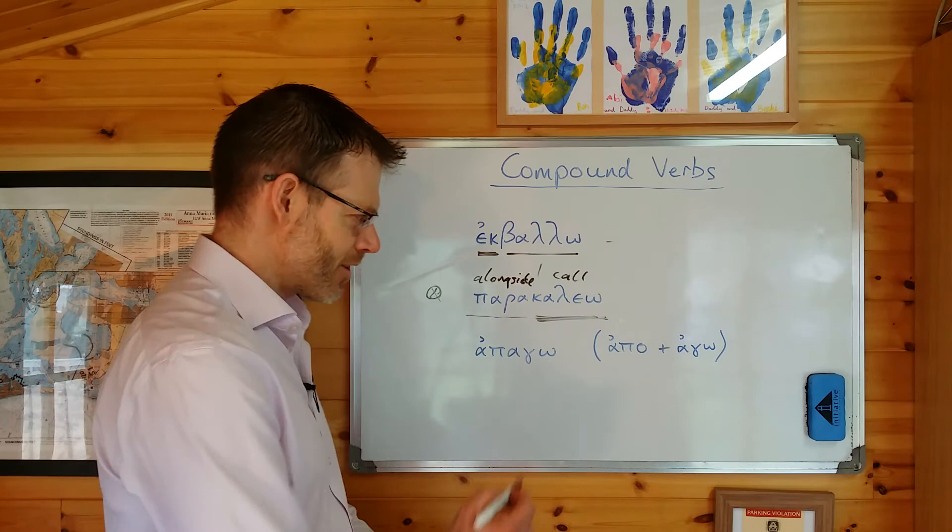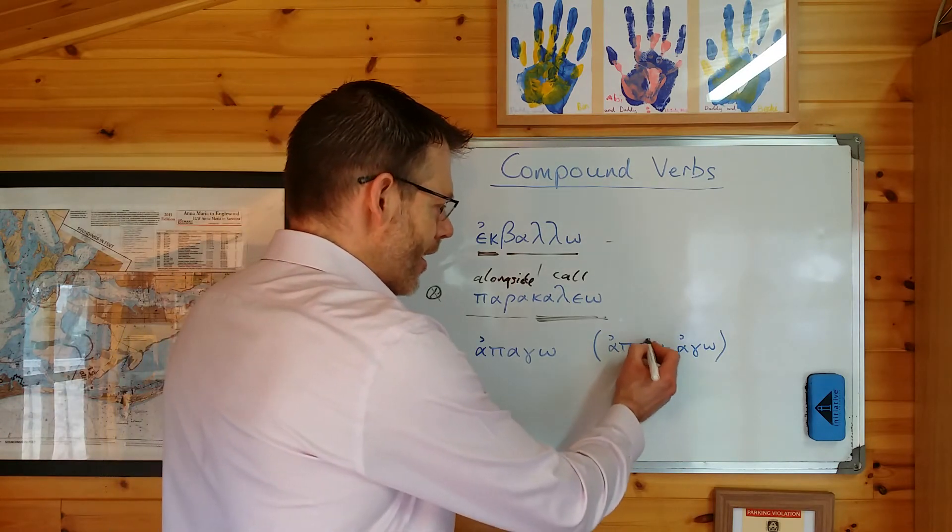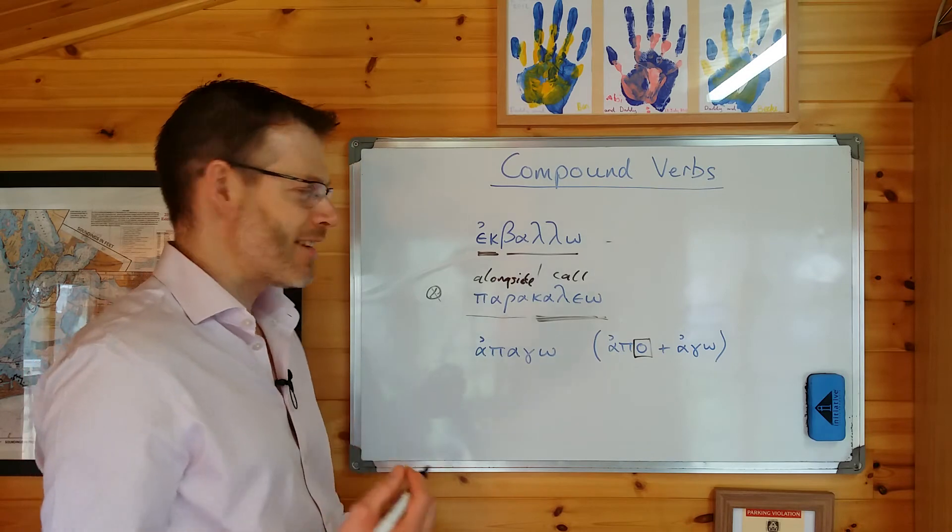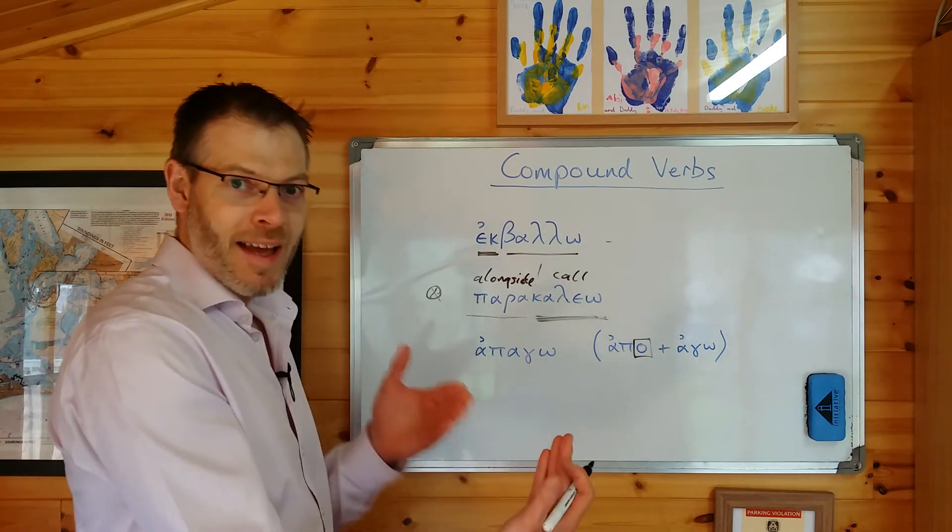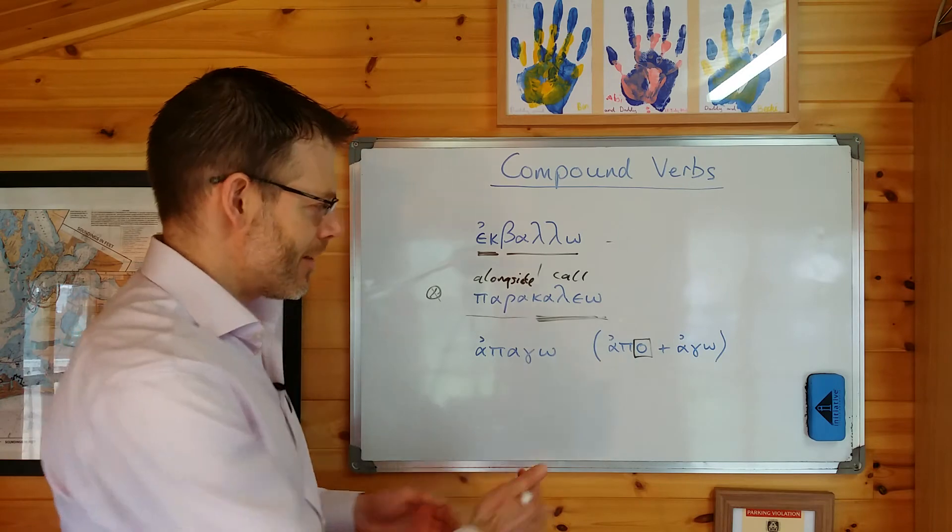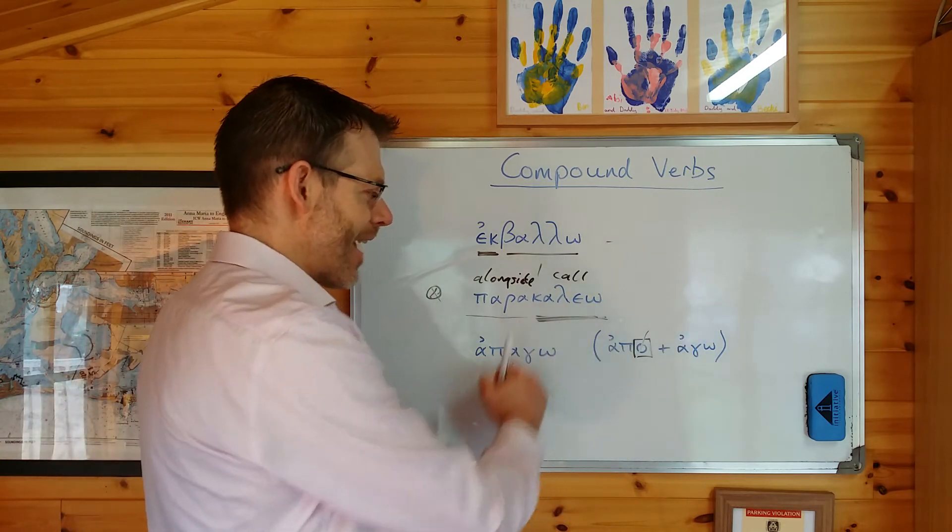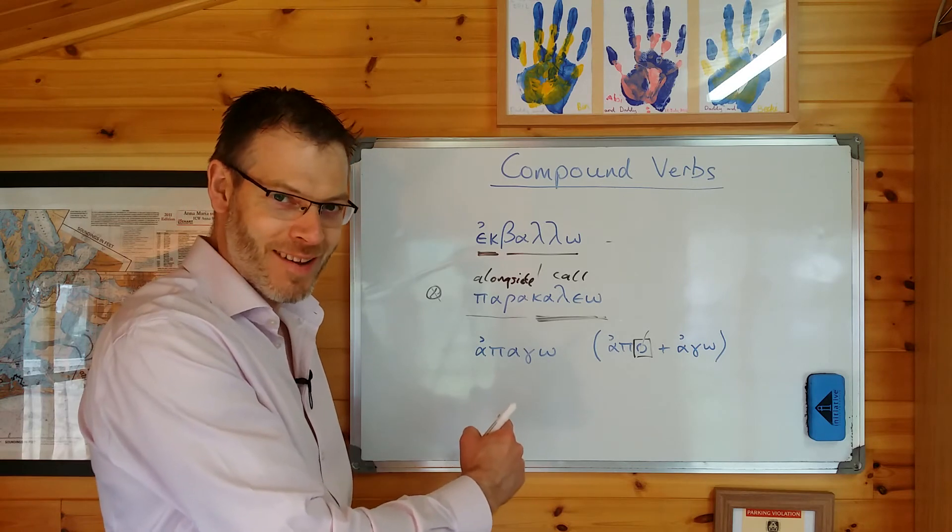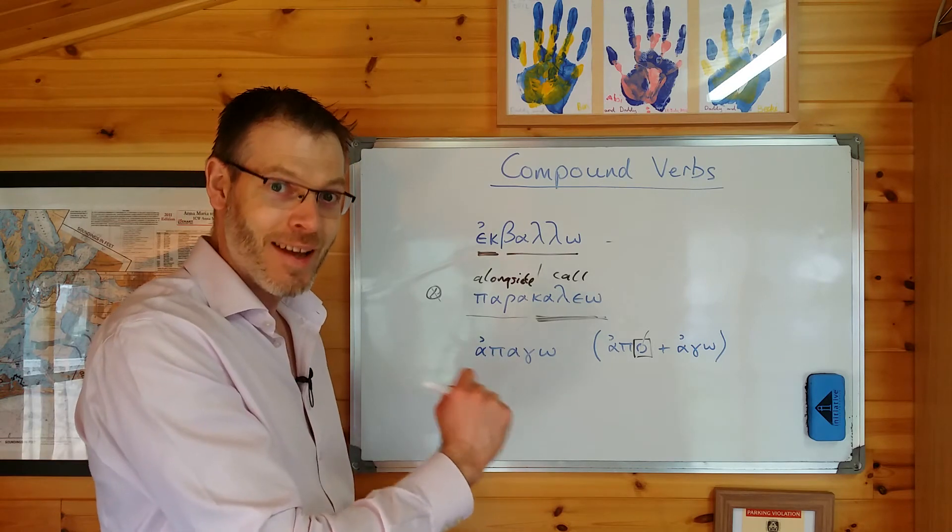Now notice what's happened here. In forming the compound, the omicron at the end of apo has done exactly what you'd expect it to do if it were bumped up against a word beginning with a vowel. The omicron has elided. So we don't have apoago, we have apago. Apago.